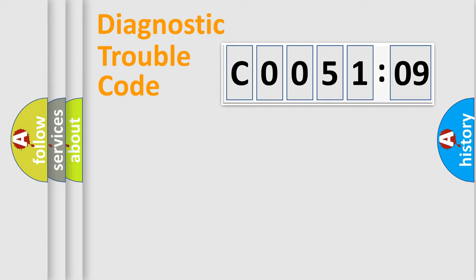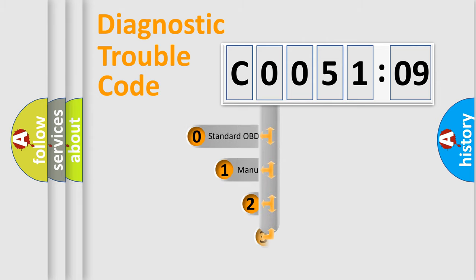Powertrain, Body, Chassis, Network. This distribution is defined in the first character code.